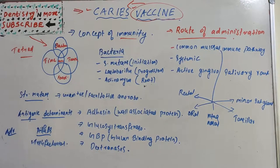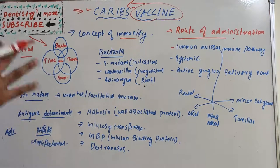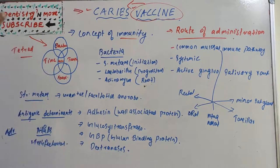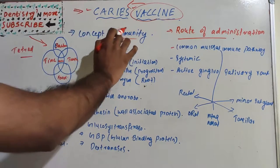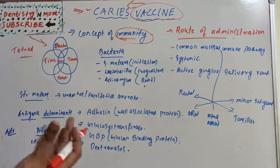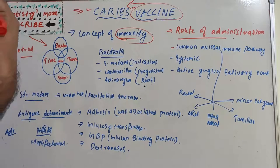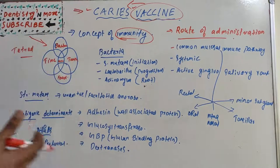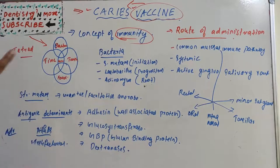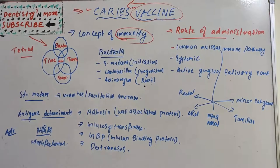We need to understand the various types of immunity: innate immunity and acquired immunity. The concept of immunity — how innate immunity works and how acquired immunity works, including passive and active types — is important background for understanding caries vaccine. Immunity is essentially the resistance exhibited by the host against any foreign antigen, including microorganisms.